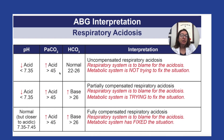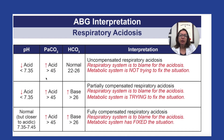The next thing we need to check is for compensation. When we look at HCO3, if it is within normal range, that means that the metabolic system is not trying to compensate for this respiratory acidosis. So if we have values that fall within these ranges, we have uncompensated respiratory acidosis. The respiratory system is to blame for the acidosis, and the metabolic system is not currently trying to fix the situation.